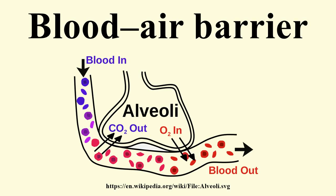The blood-air barrier exists in the gas-exchanging region of the lungs. It exists to prevent air bubbles from forming in the blood, and from blood entering the alveoli. It is formed by the type 1 pneumocytes of the alveolar wall, the endothelial cells of the capillaries, and the basement membrane between the two cells.